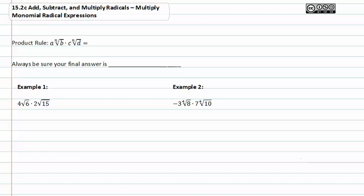It's important to remember the product rule for multiplying radicals. Notice that the exponents don't matter, but the indexes do. They have to match.